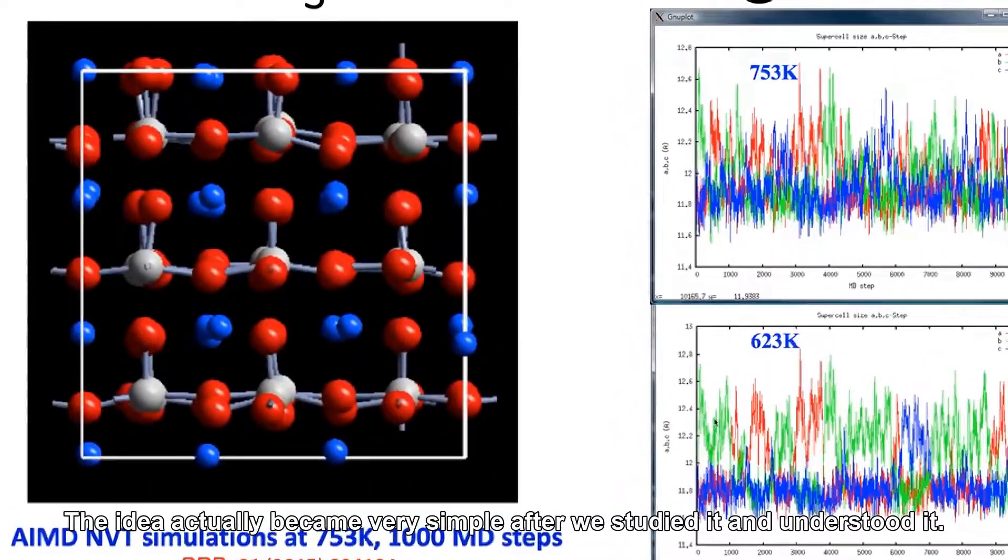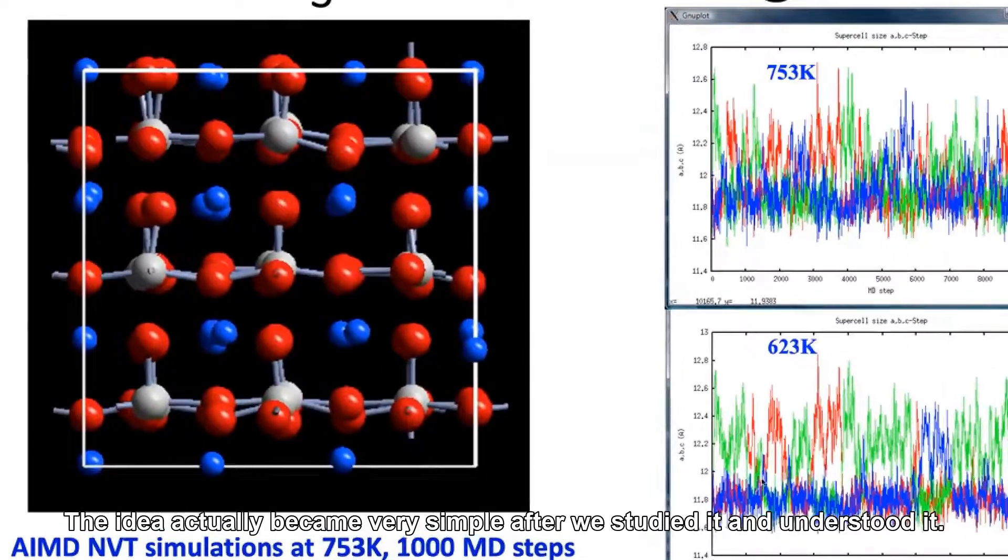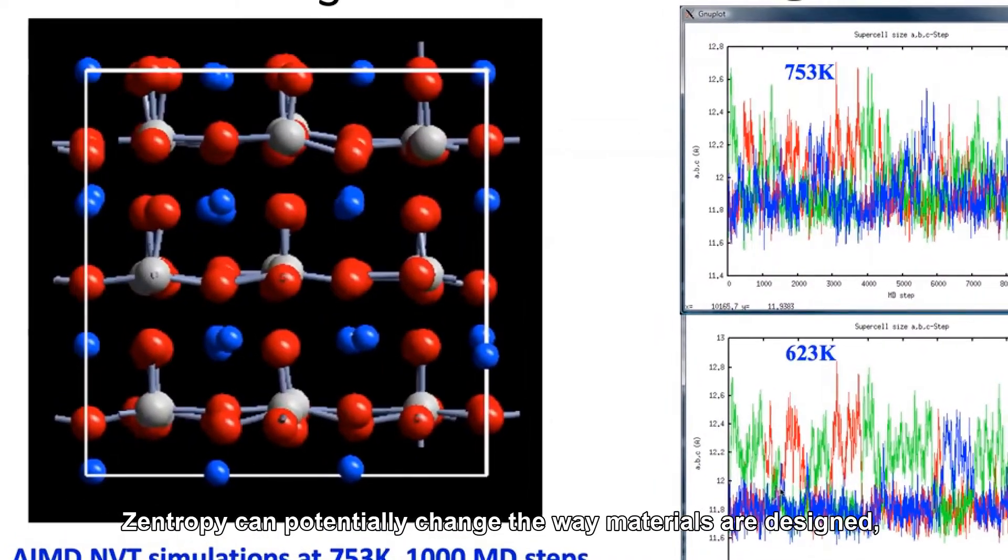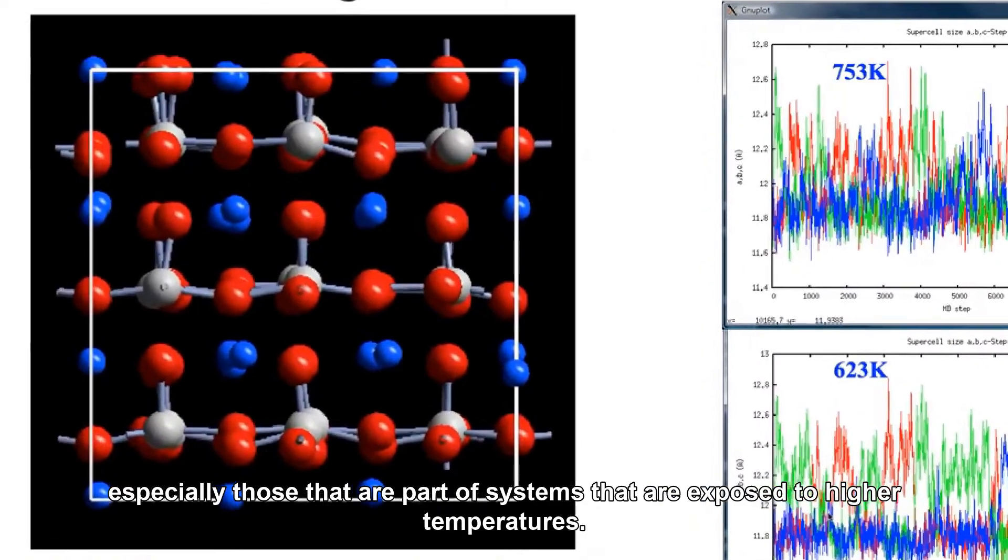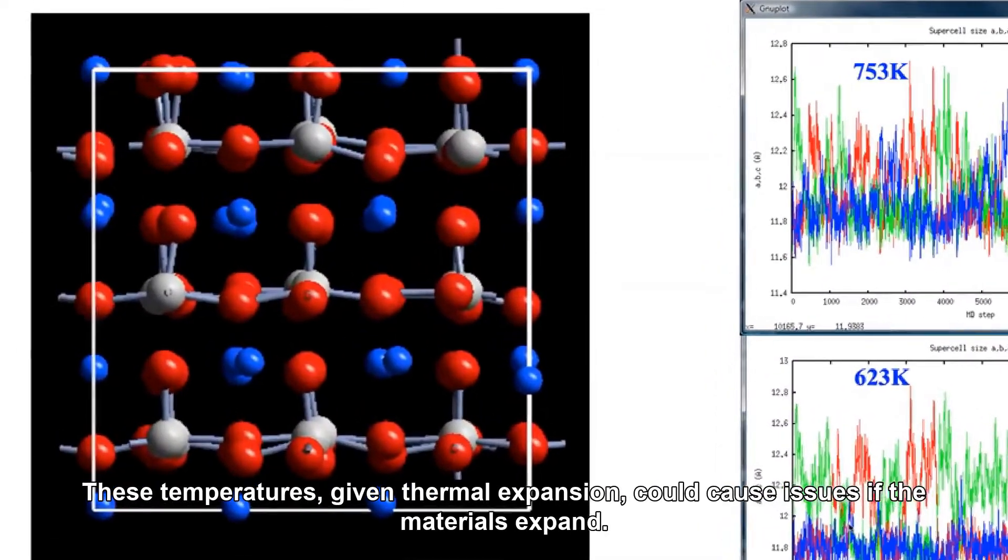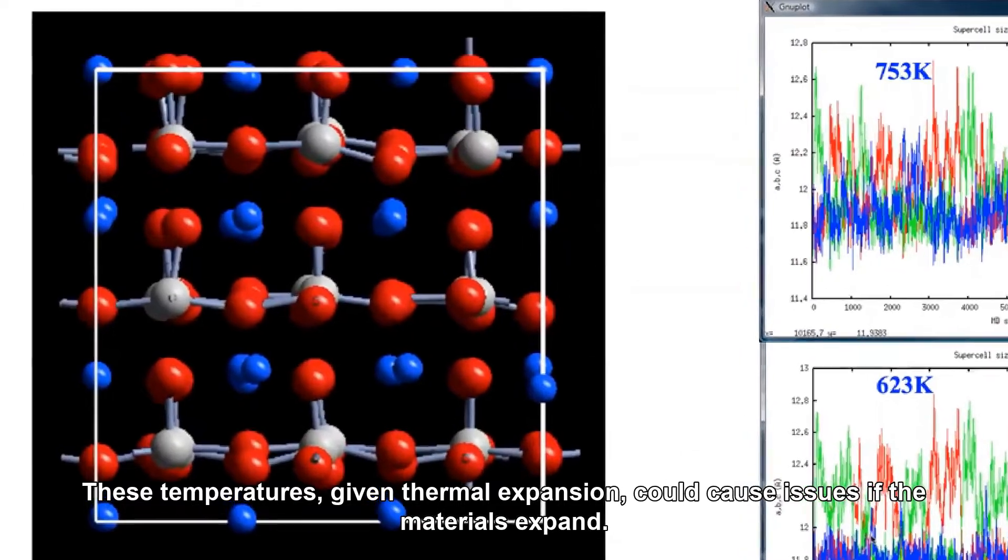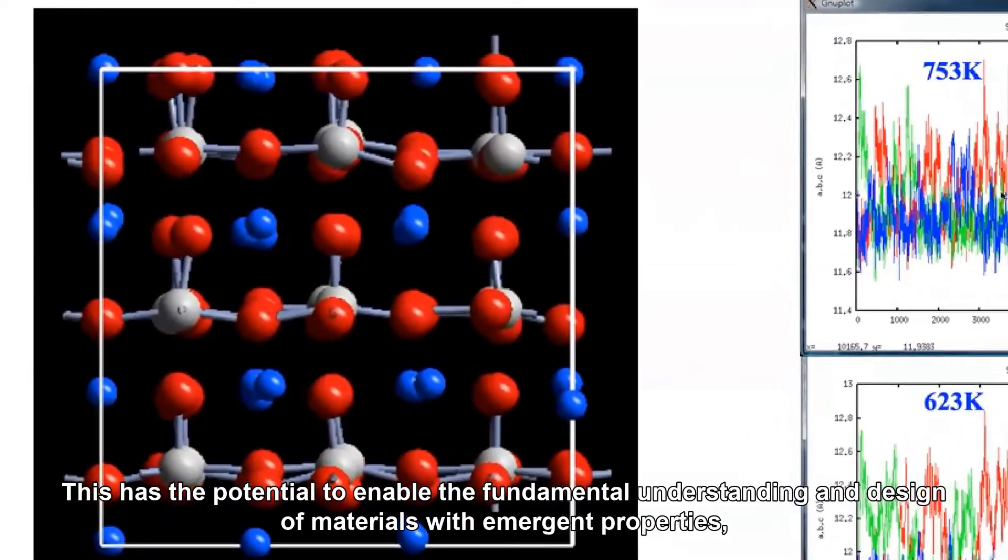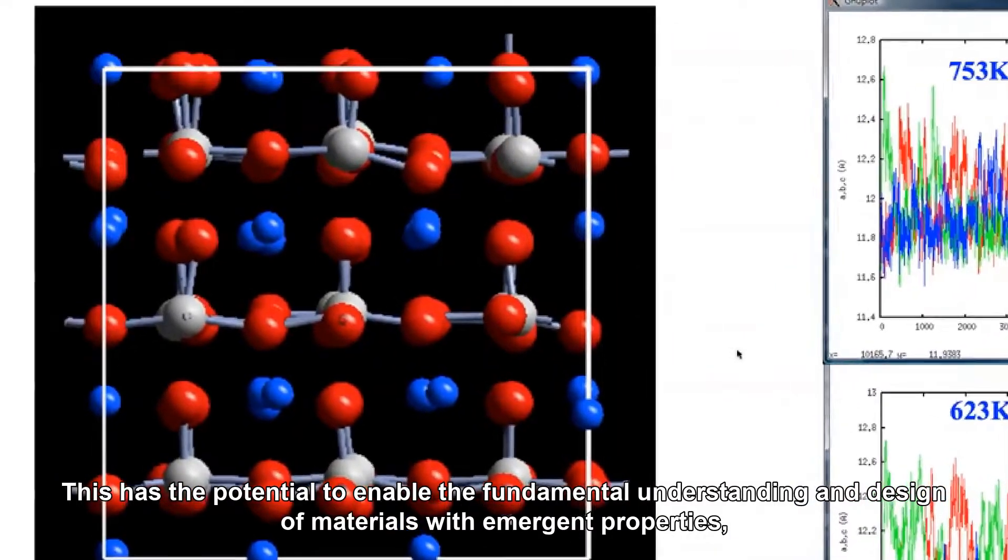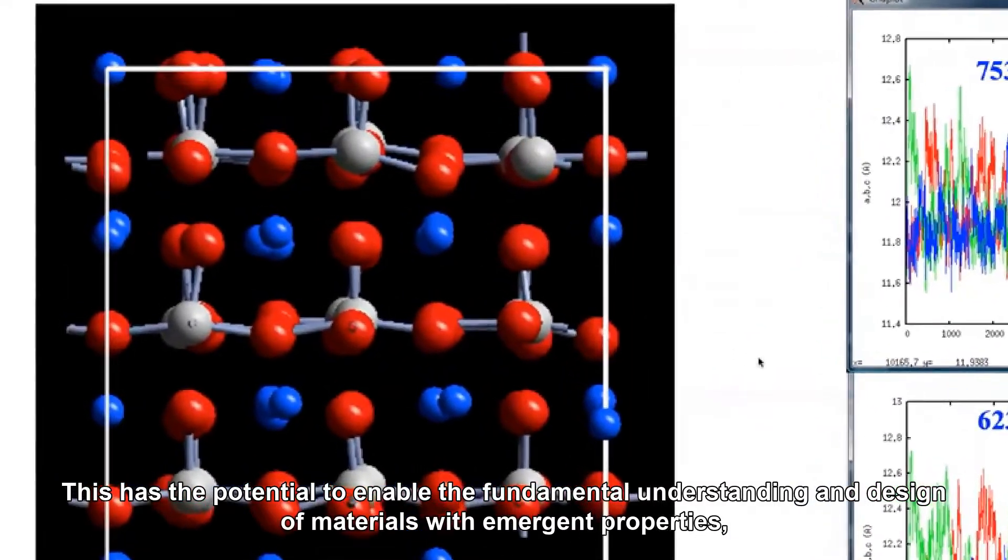The idea actually became very simple after we studied it and understood it. Zentropy can potentially change the way materials are designed, especially those that are part of systems exposed to higher temperatures. These temperatures, given thermal expansion, could cause issues if the materials expand.